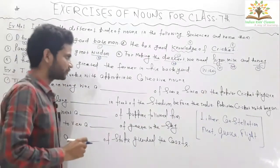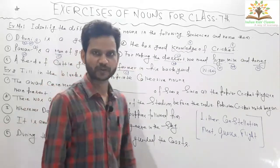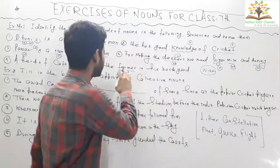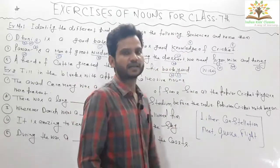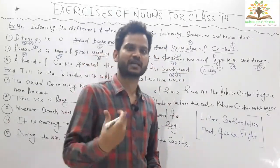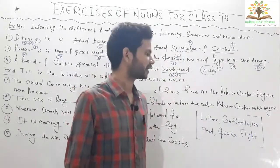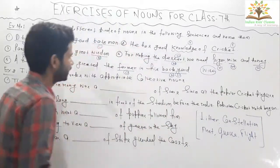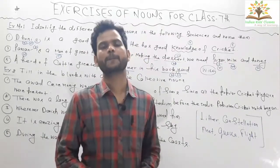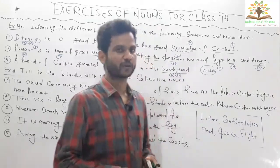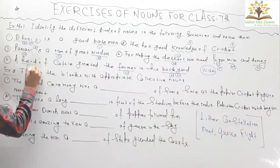Question number five: 'A herd of cattle greeted the farmer in his backyard.' Farmer is a common noun because farmer can be anyone. Backyard is also a common noun because there are many kinds of backyards. Keep in mind that in most cases we can make the plural of a common noun.